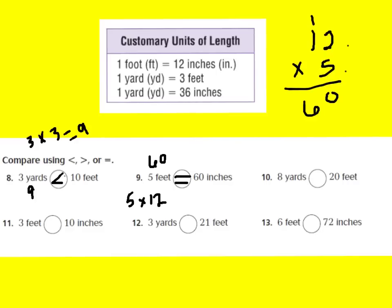Number 10 says: 8 yards compared to 20 feet. I need to see how many feet are in 8 yards. There are 3 feet in 1 yard, so 3 feet times 8 yards equals 24 feet. So 8 yards equals 24 feet, and since 24 is greater than 20, 8 yards is greater than 20 feet.